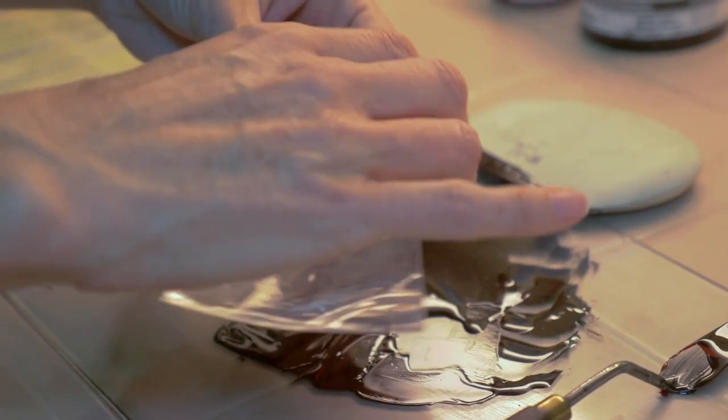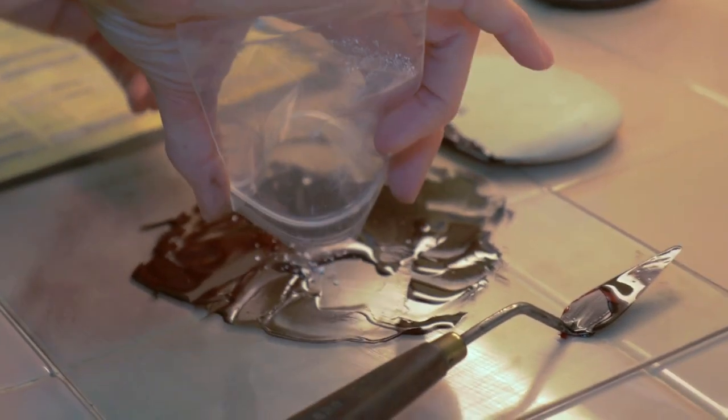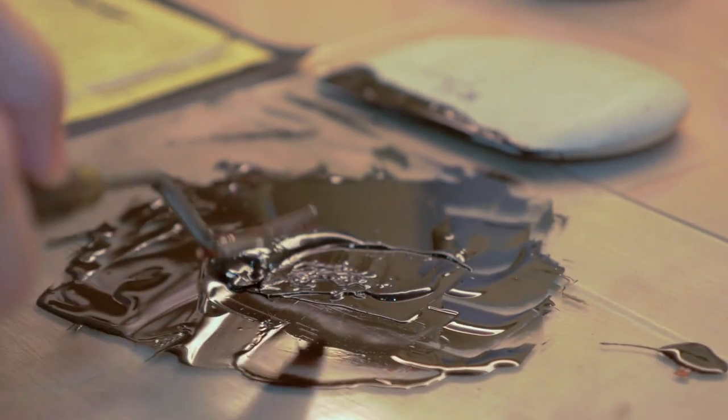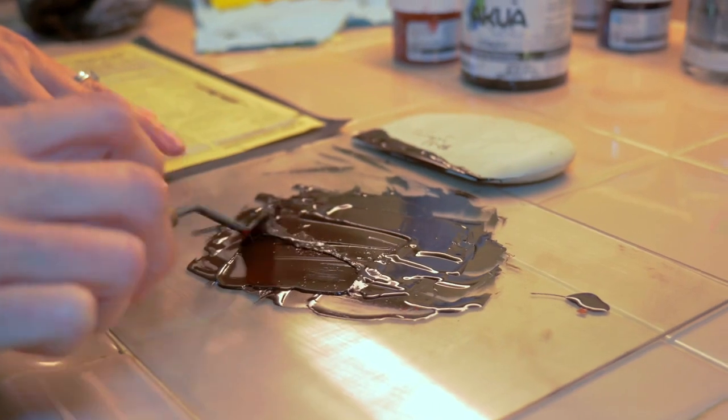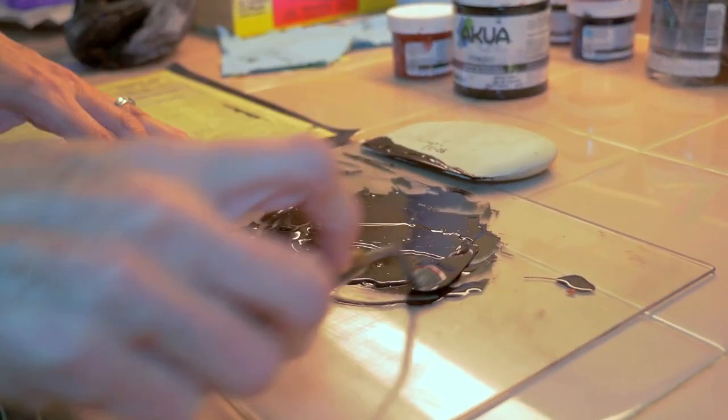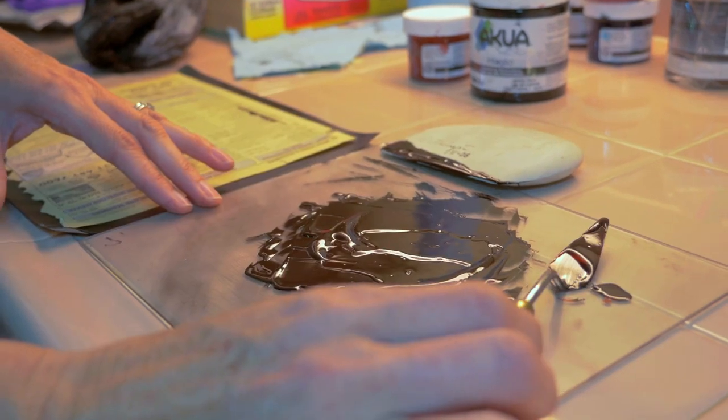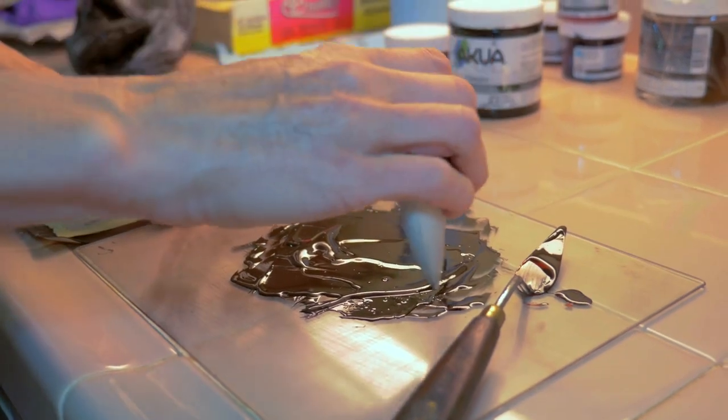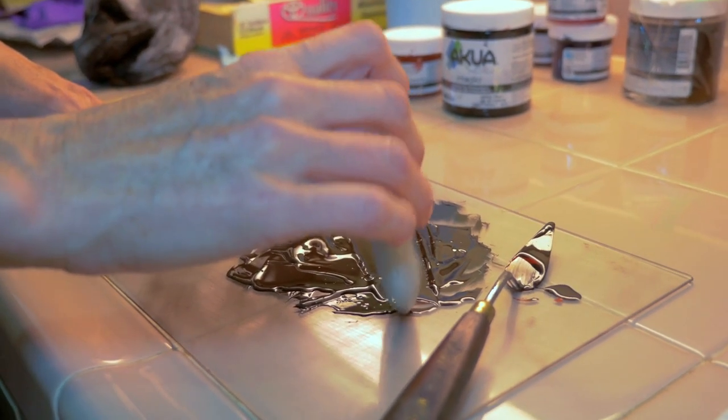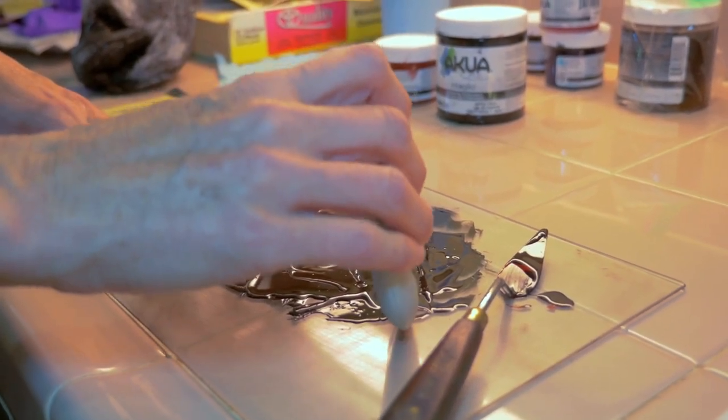So this is just a teeny, tiny bit of ash from a special companion who's passed. So you can see how much we're adding. It's just a teeny, teeny, tiny bit. So I'm just mixing it in to the ink, and then we kind of get a little bit on the tool here, and then ink the plate with this.